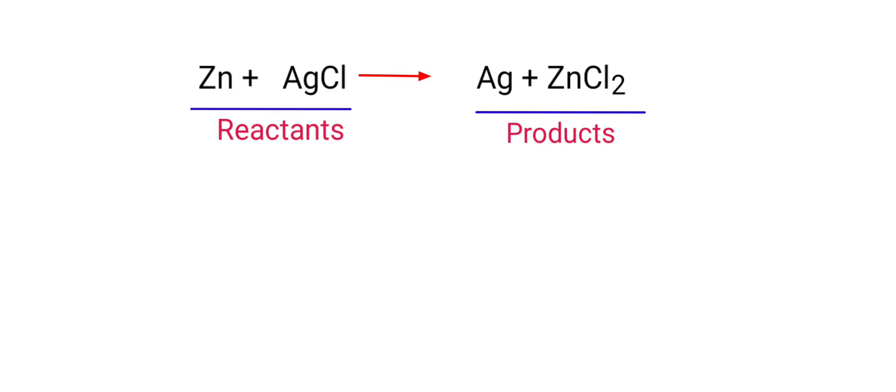In this equation, the reactants are zinc and silver chloride, and the products are silver and zinc chloride. If you look at this equation, the equation is not balanced.